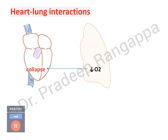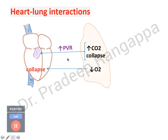In heart-lung interaction, any hypoxemia in the lung can lead to cardiovascular collapse. Along with this, there can be increased pulmonary vascular resistance, significantly accentuated by hyperinflation causing hypercapnia, or by lung collapse. Hypoxemia can cause cardiovascular collapse, and hypercapnia or atelectasis has a profound bearing on increasing pulmonary vascular resistance — these have a direct correlation.